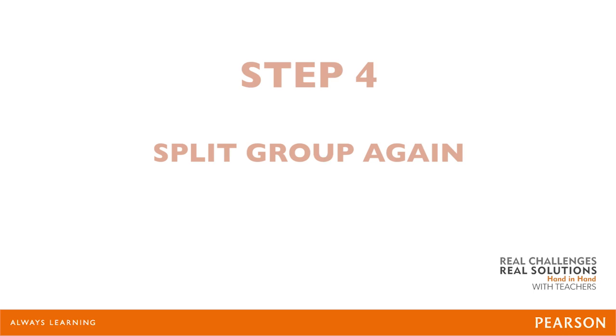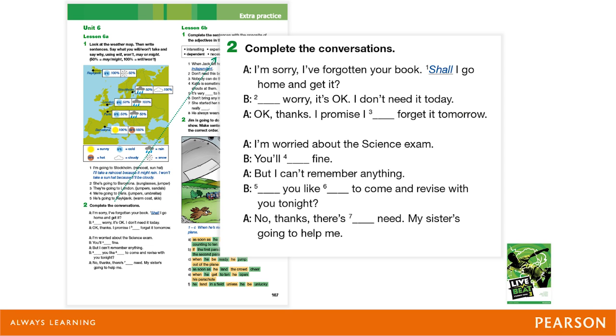If there are any problems, I'll ask the less able students who have just taken part in the presentation stage to try and help. This has the two-fold advantage of allowing me to check how much of the presentation the less able students have understood, and also to change the usual dynamic, which is good for the confidence of the less able students. Step 4: At this stage, we're going to split again. More able students will go back to MyLab for more autonomous controlled practice at their level, while less able students will complete further controlled practice with my support using extra materials found at the back of LiveBeats Students' Book.